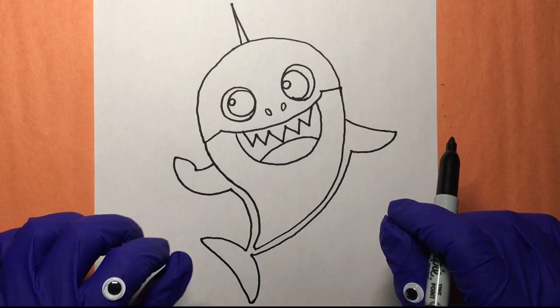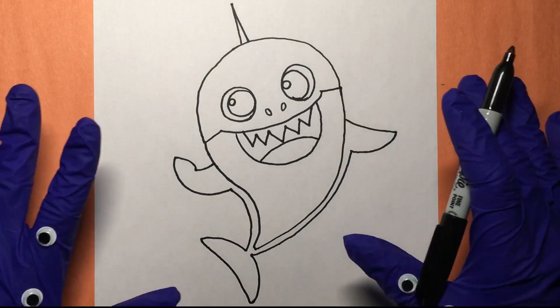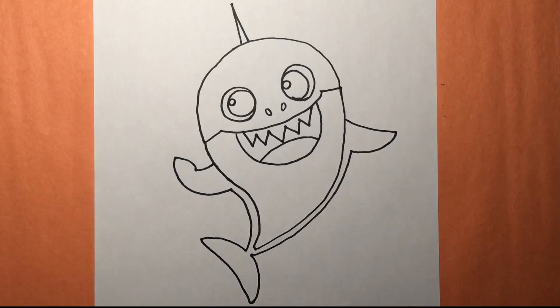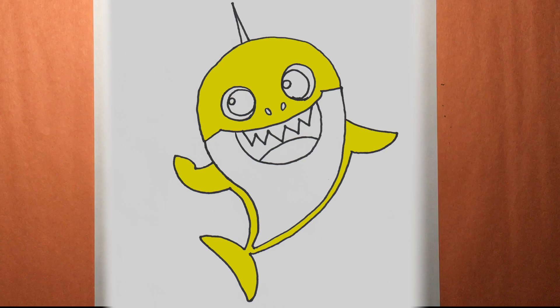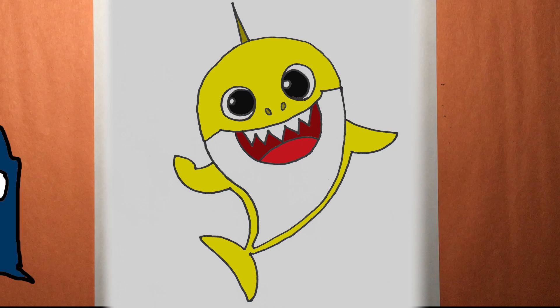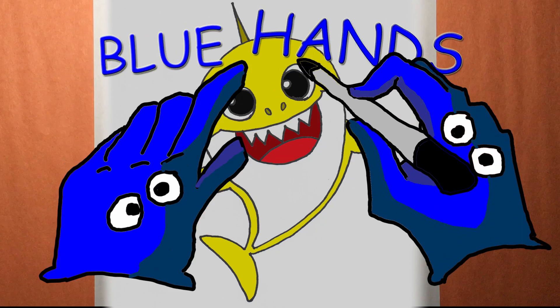All right, everybody. And now we're ready to do the color. Here we go. We have yellow for his body. Dark yellow for his nose and fin. Red for his tongue. Dark red for his mouth. And black for his eyes. Thank you. We'll see you next time.